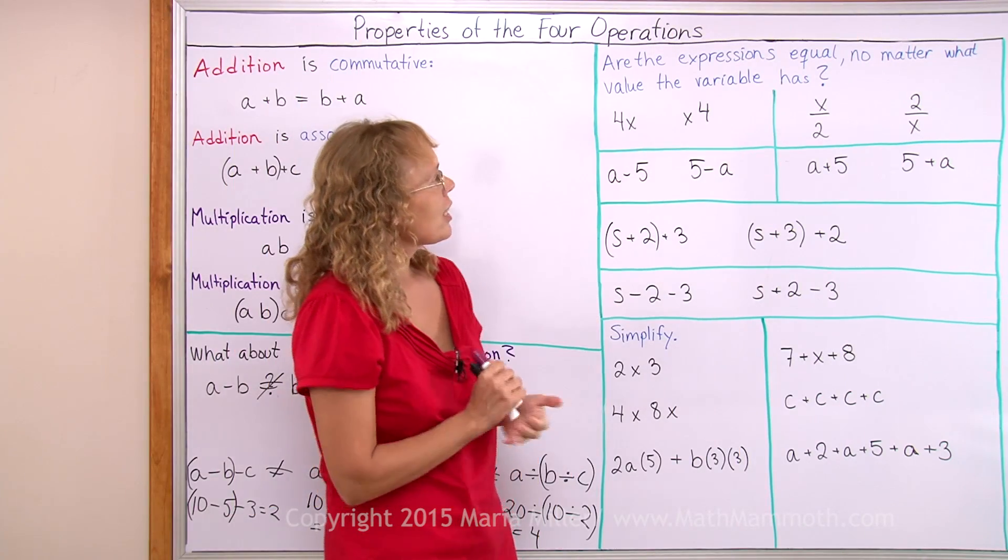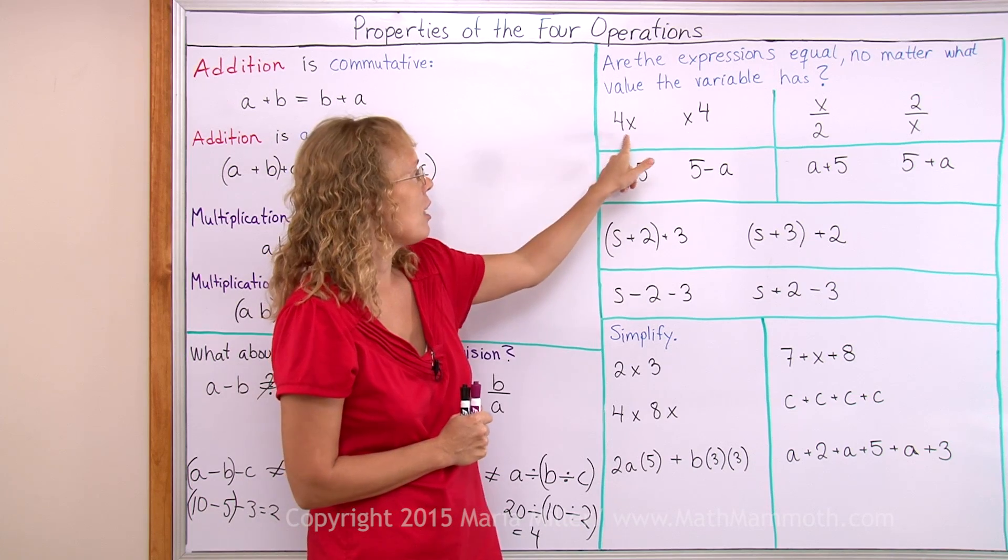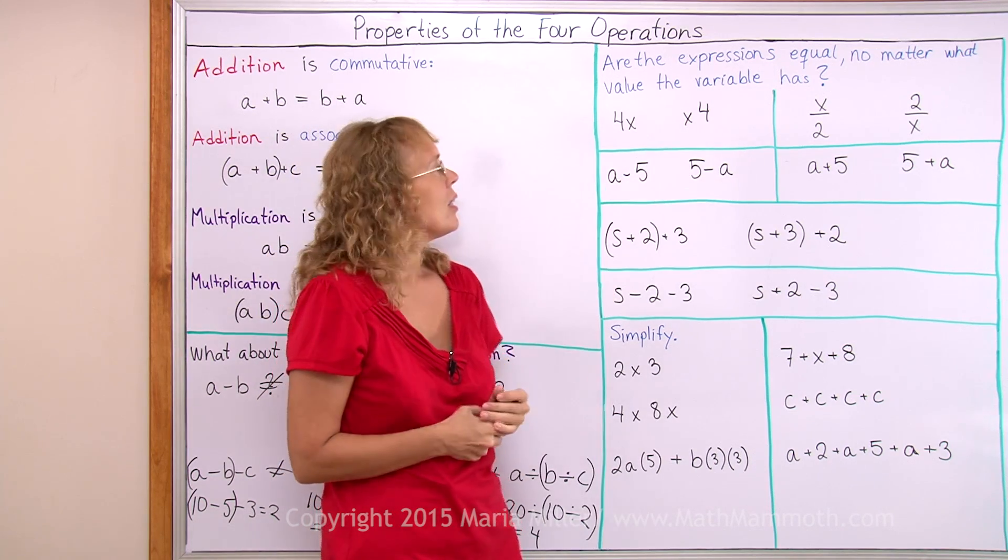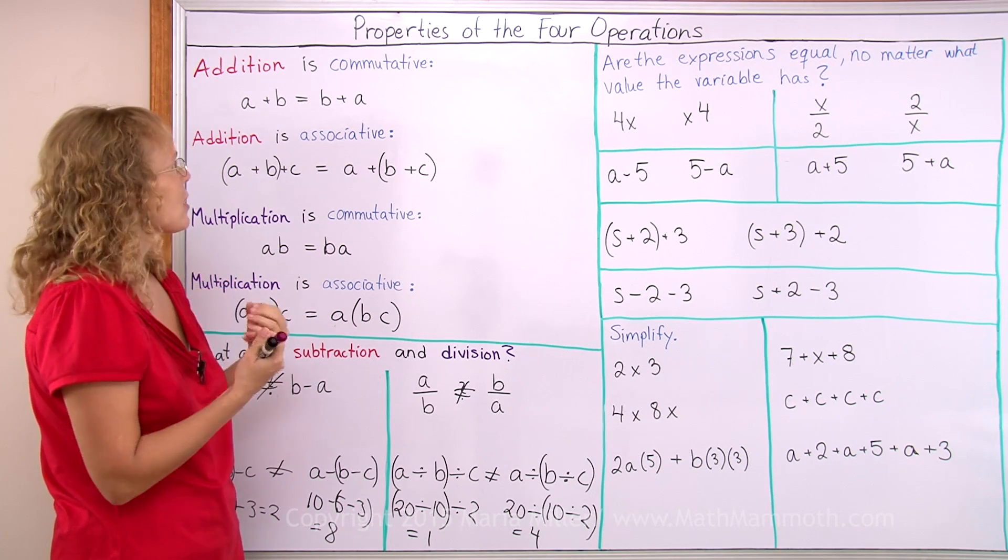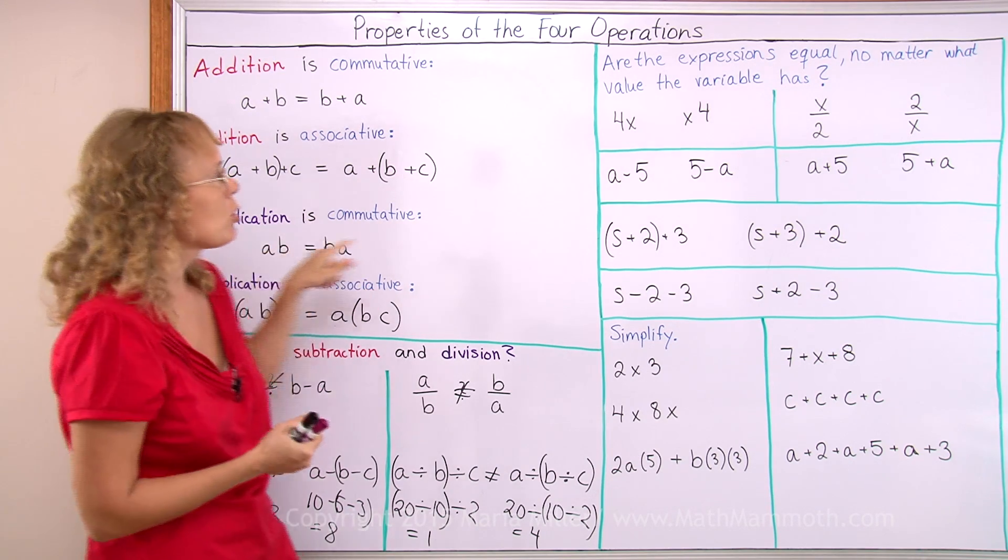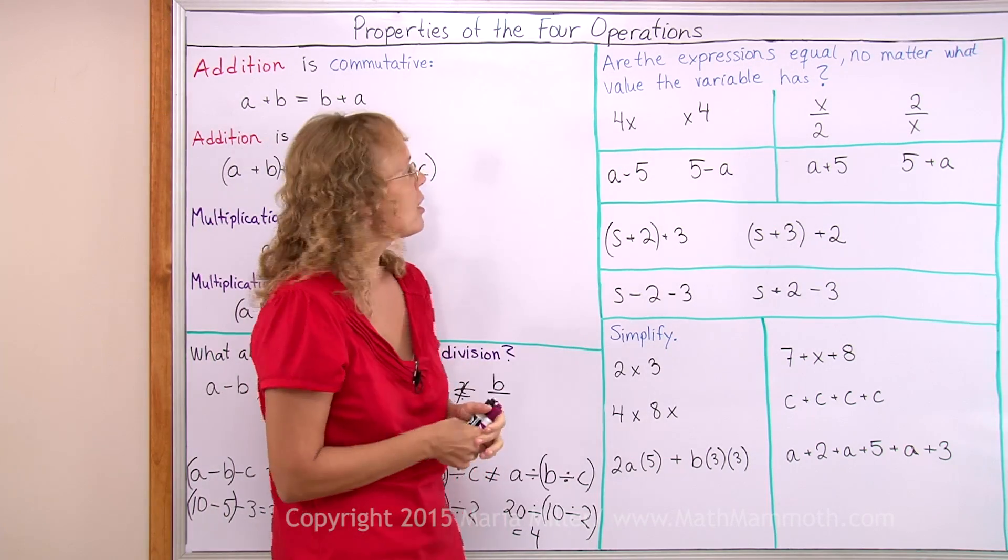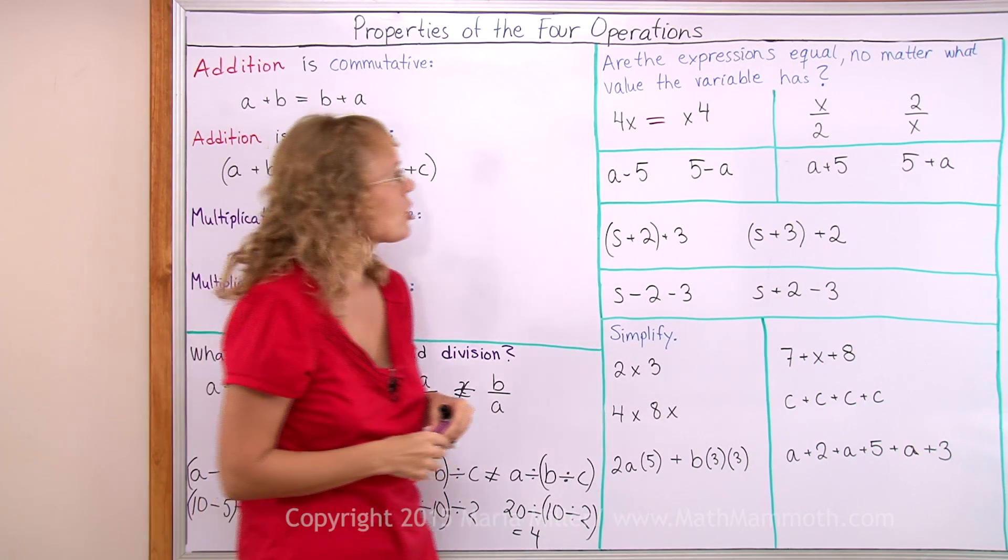Are the expressions equal no matter what value the variable has? This is 4 times x, x times 4. Now that is a simple expression. It is just the same as here, just switching the order of those two numbers, two factors. And so yes, those are equal by the commutative property of multiplication.